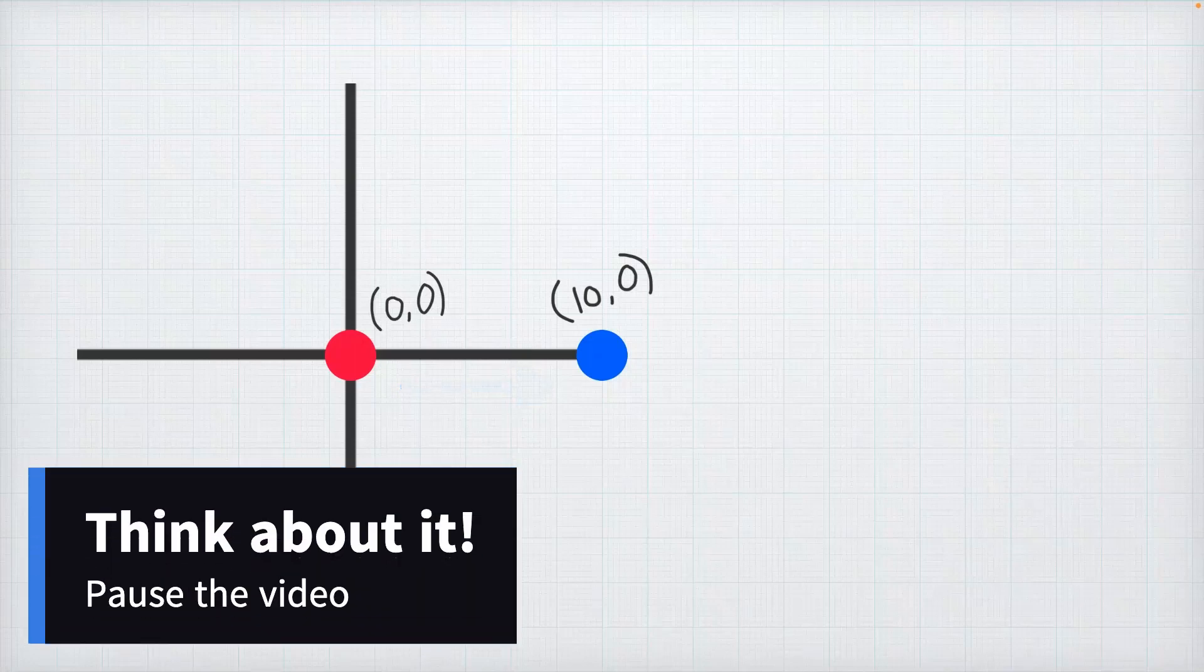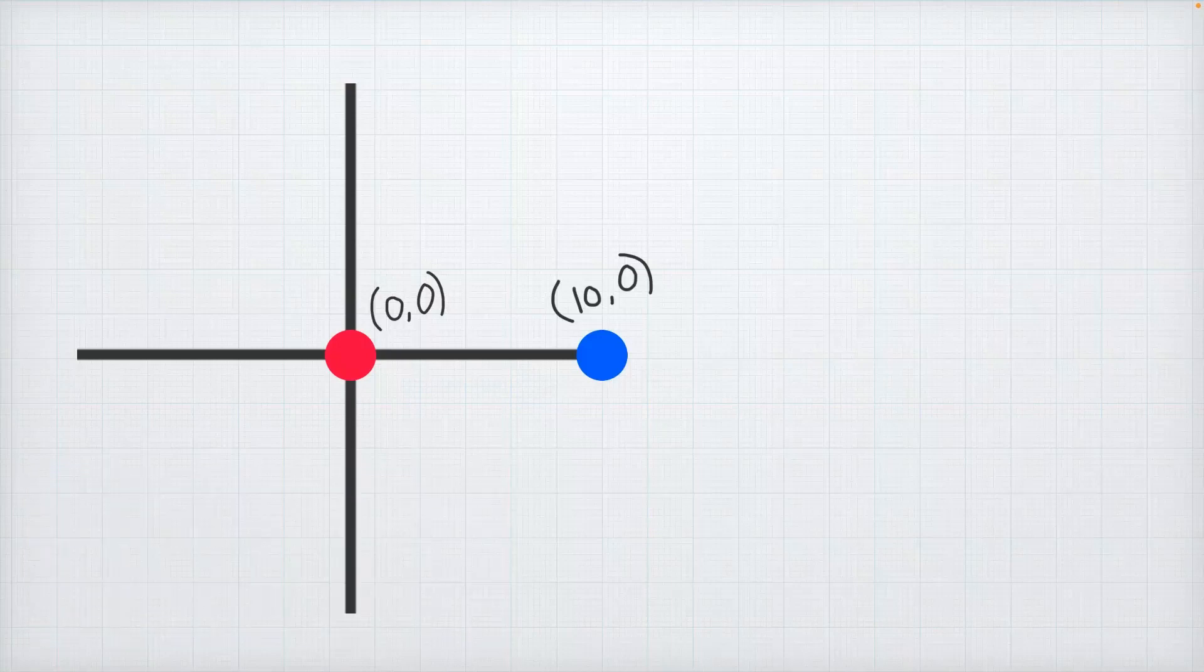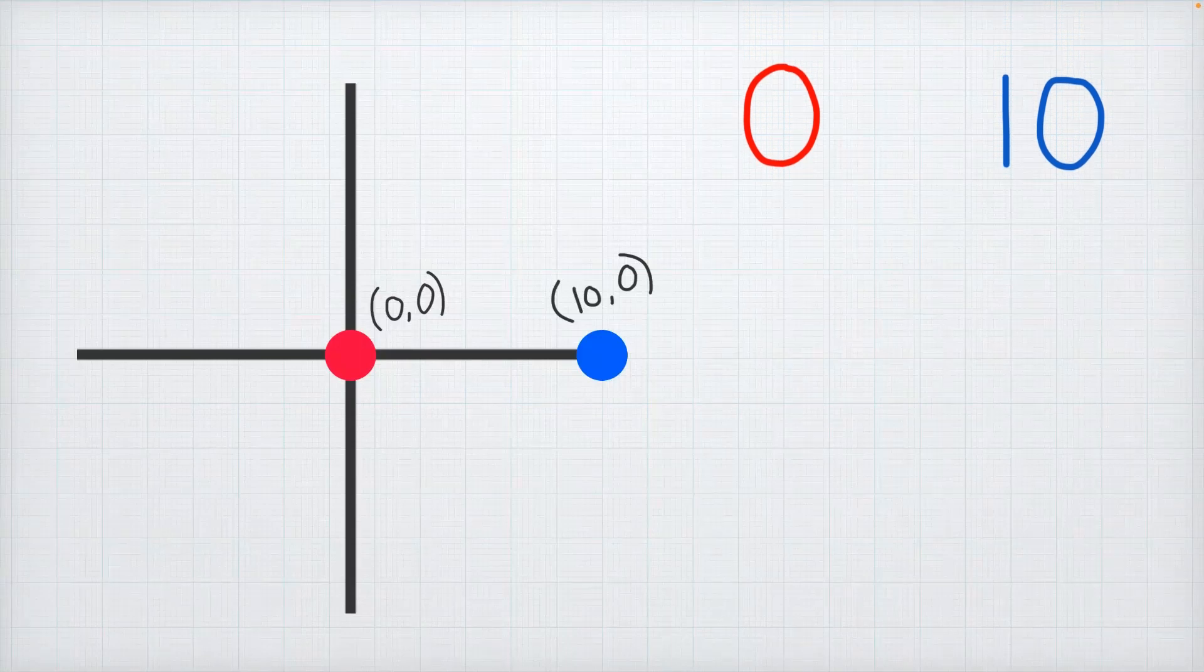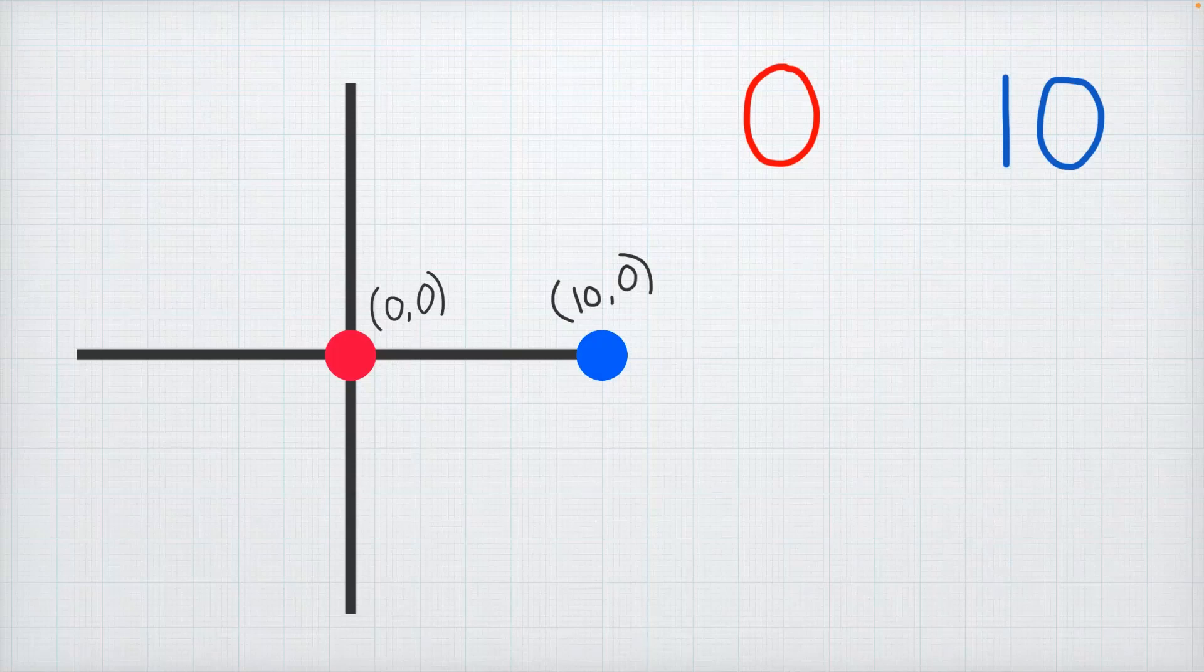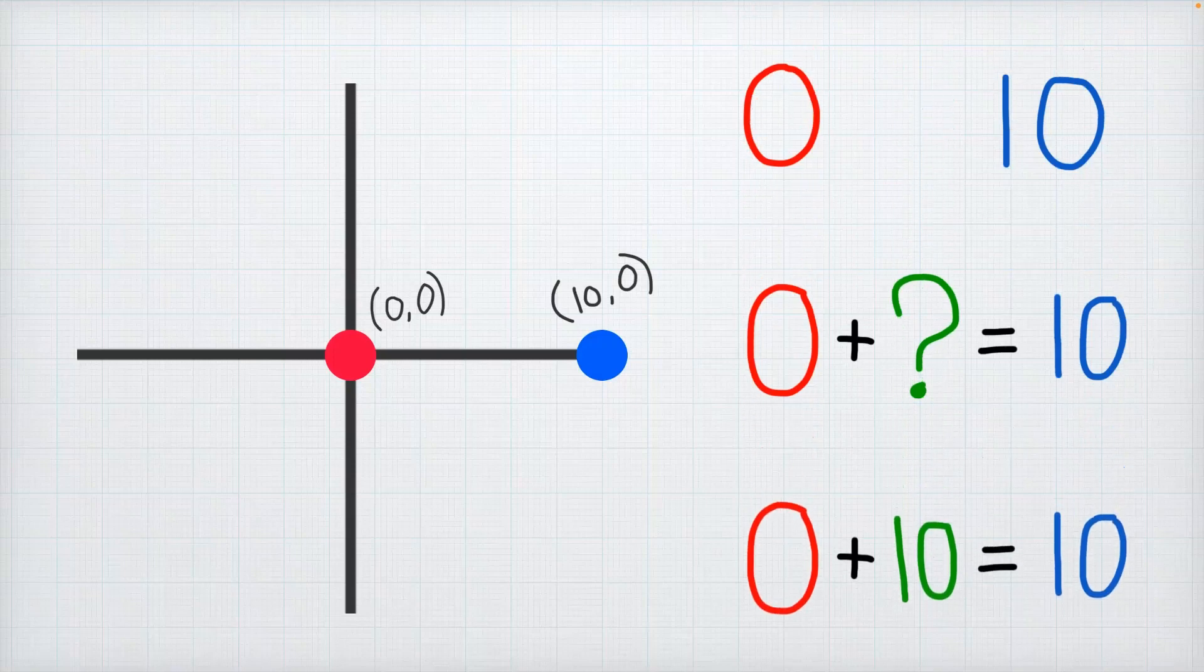I want you to pause the video here and see if you can figure out on your own. So to move Tom's dot to the blue dot we can look at the x coordinate of each point. The y values never change so we can ignore them for now. To move Tom's dot we need to ask ourselves what can we add to Tom's x coordinate which is 0 that will make the whole thing equal 10 which is the blue dot's x coordinate. We need to add 10 to Tom's dot in order to make it move and its position be equal to that of the blue dot.